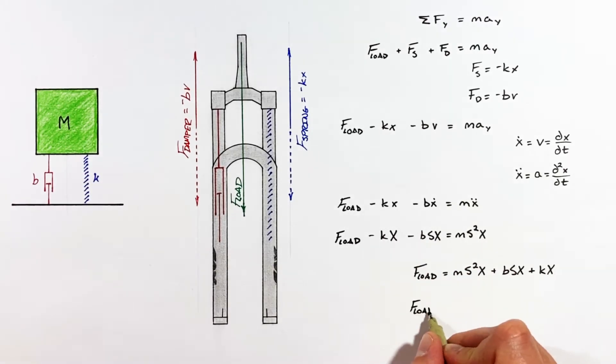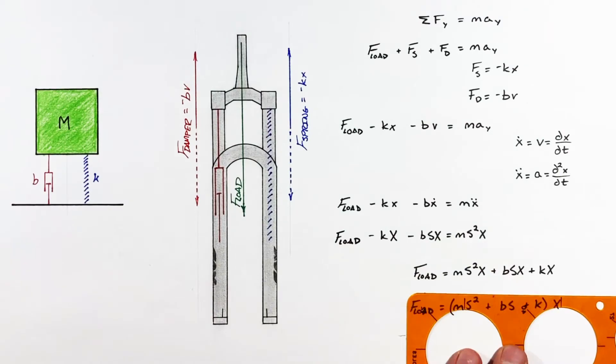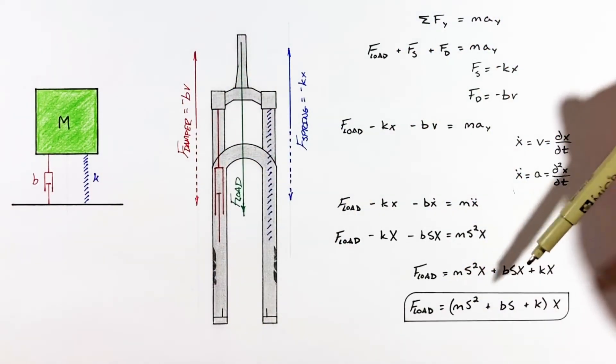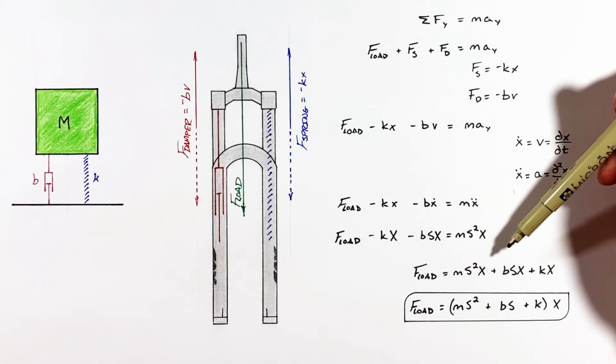So factoring out X, we get this, a function relating the load, spring constant, and damping coefficient to one another. Now to show you what this result means, I want to back up to Newton's second law and build this equation piece by piece in Excel.